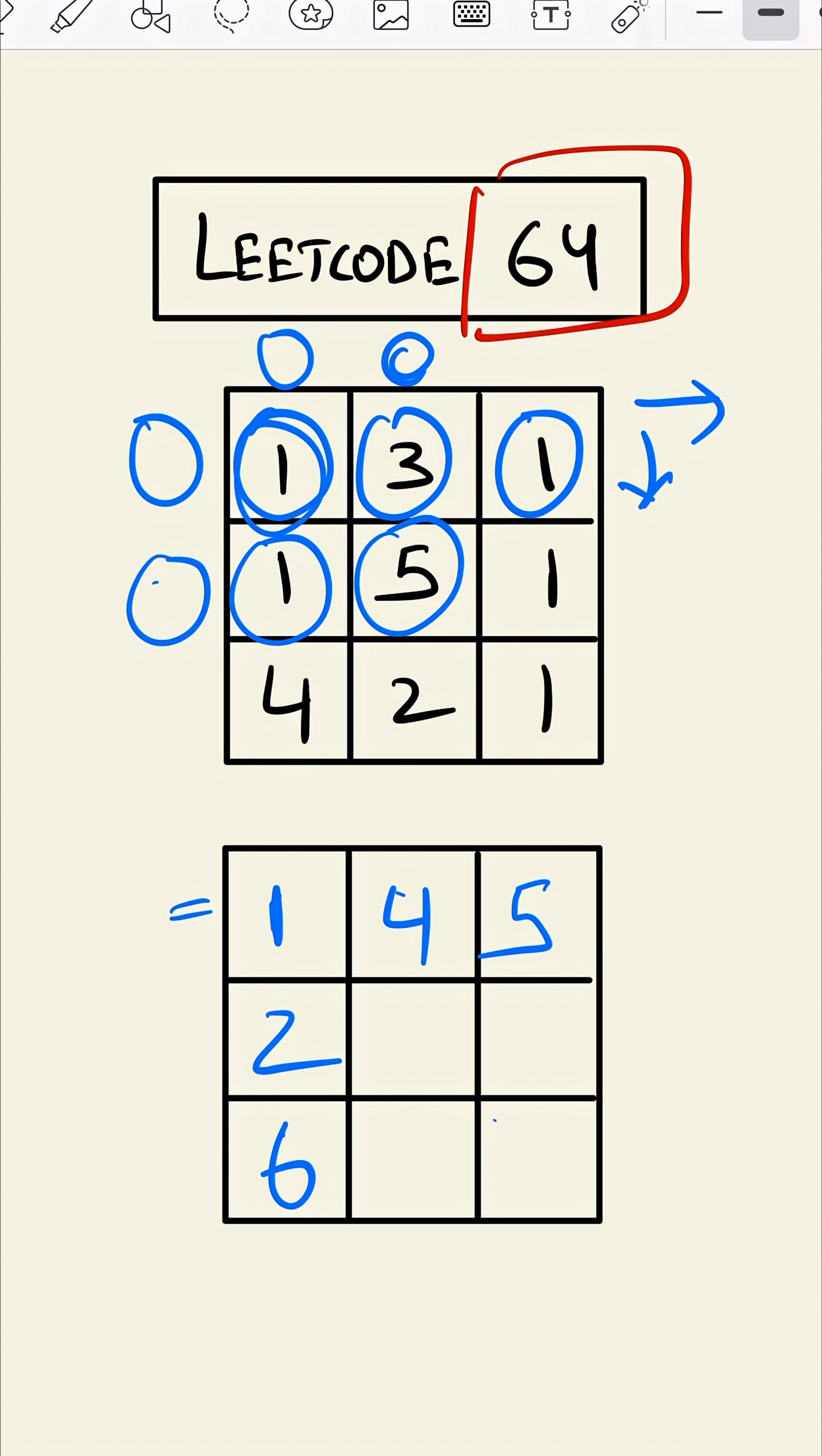Now for this value, the minimum of four or two which is two, plus five equals seven. Similarly for this, the minimum of seven or five which comes to five, plus one equals six.